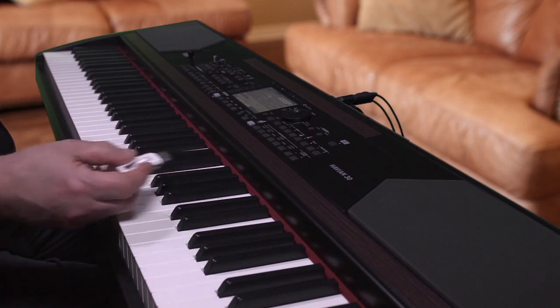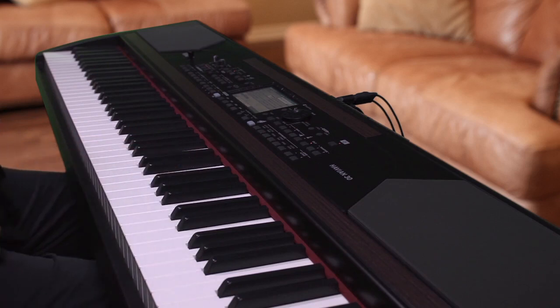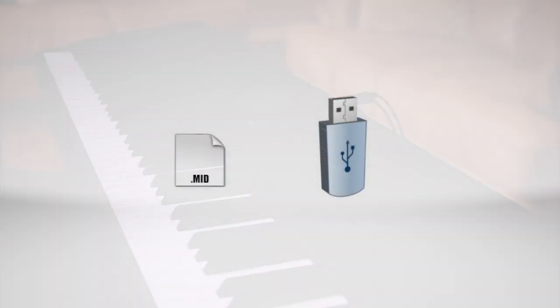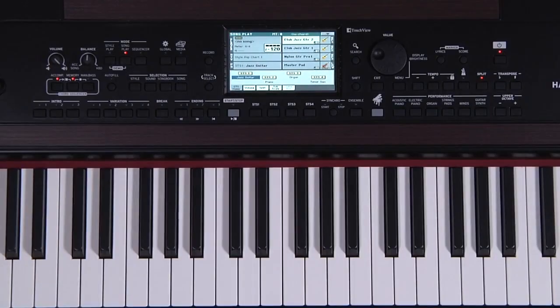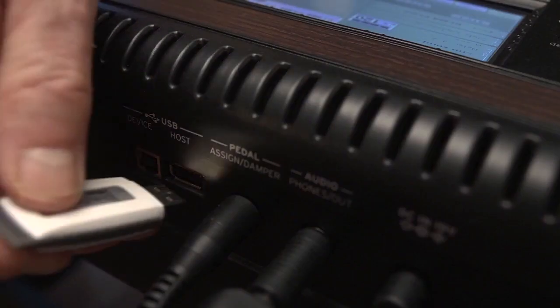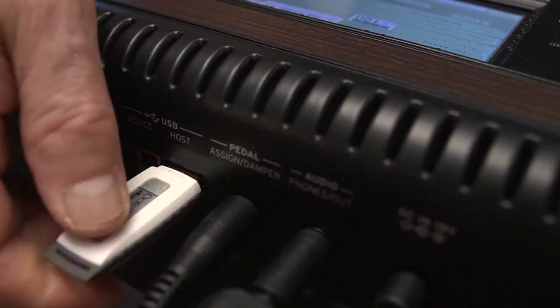If you want to follow along with the exercises in this chapter, you'll need a USB memory device with a standard MIDI file, a karaoke MIDI file, and an MP3 file on it. If you don't have this right now, you can always come back later when you do. OK, reach back and insert it into the USB port on the back of the instrument.